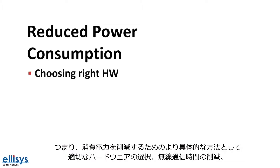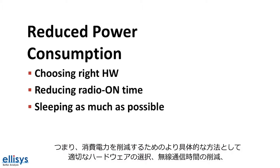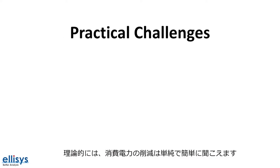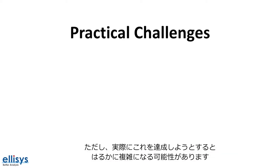Some of the more specific ways to reduce power consumption include choosing the right hardware, reducing the radio on time, sleeping as much as possible, and lowering the transmit power of the radio. In theory, reducing power consumption sounds simple and straightforward. However, when trying to accomplish this in practice, it can be much more complicated.